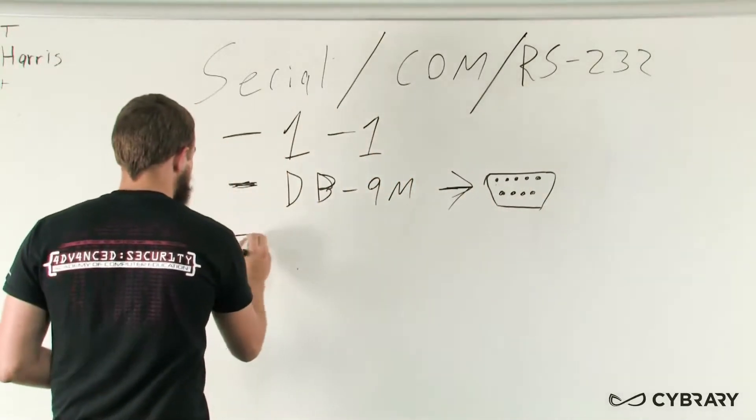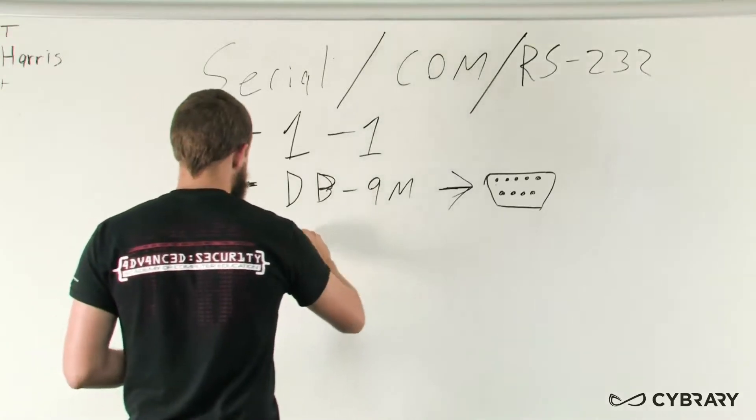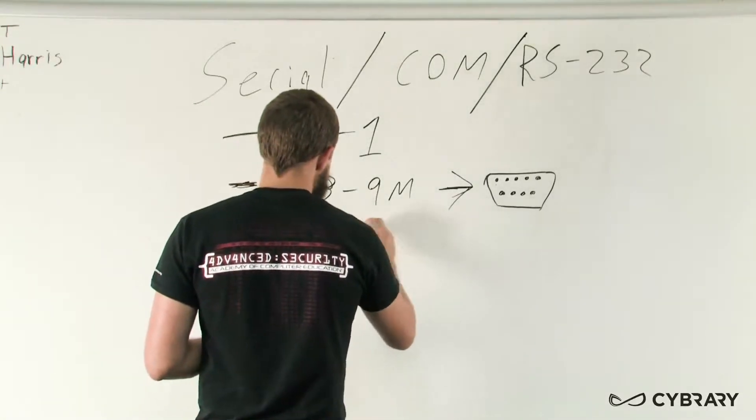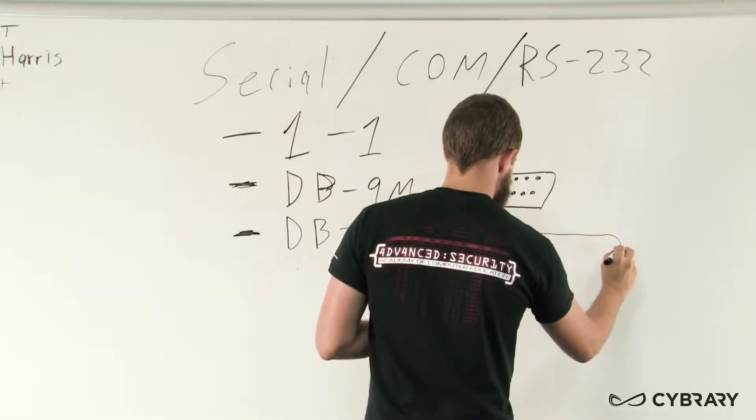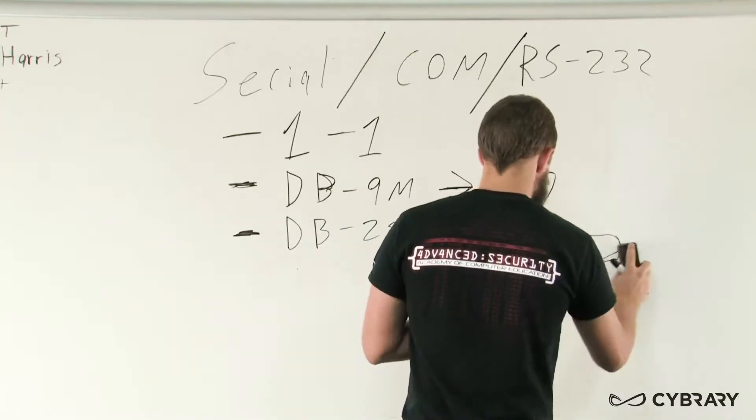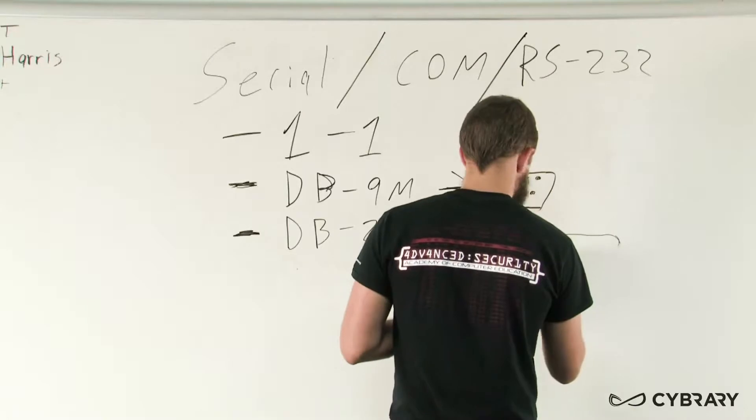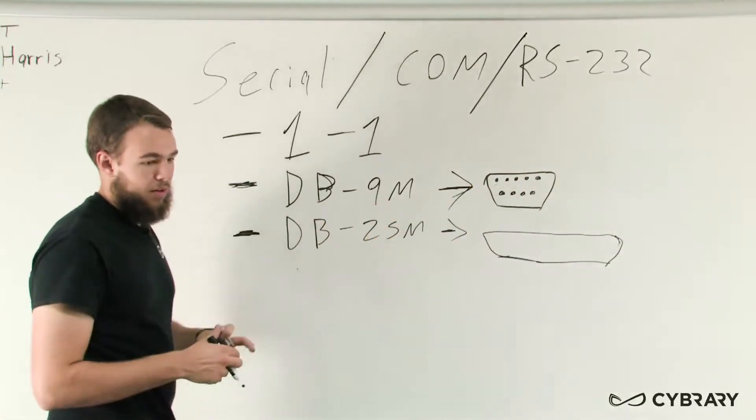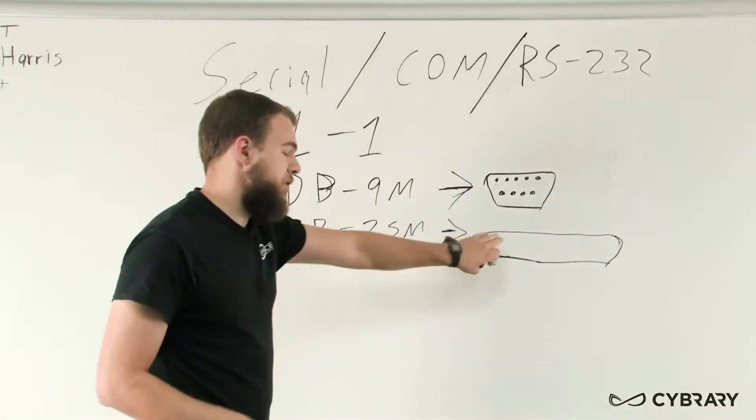The serial cables also have DB25M ports, which have 25 pins. And these 25 pin ports are essentially just longer versions of what we'd see here on our DB9. And we'll have all of our pins on our DB25 port.